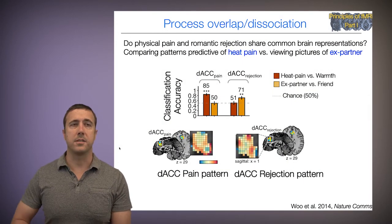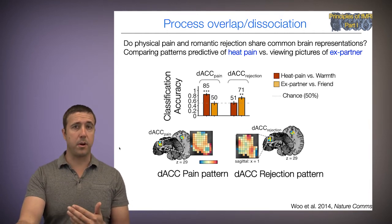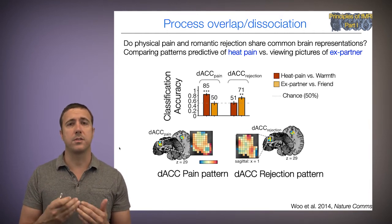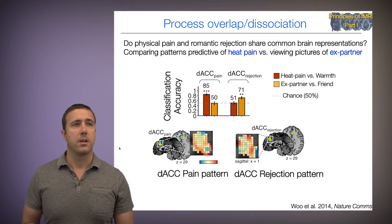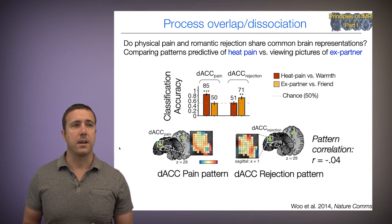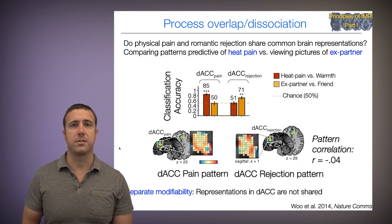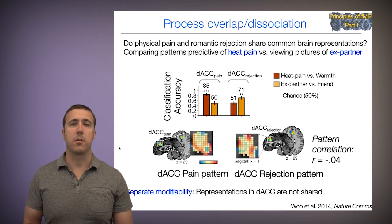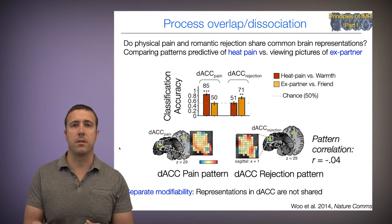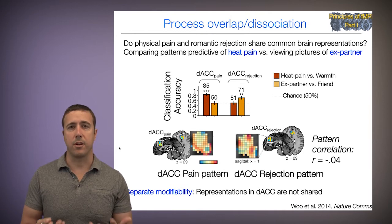We can identify another pattern which is tracking rejection. This pattern responds significantly to the rejection event — viewing the ex-partner — but there's no response to painful heat. So what does that mean? That means that these two conditions and these two patterns are separately modifiable. The representations of pain and rejection, at least by these measures, in the dorsal anterior cingulate are not shared.